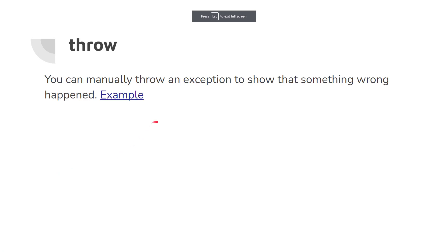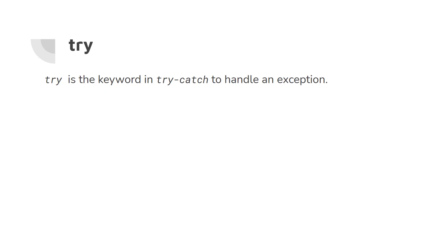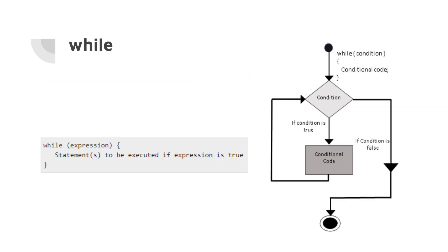The 'throw' keyword is used for manually throwing an exception. 'Try' is the obvious keyword in try-and-catch to handle an exception. 'While' is the while loop — the syntax is while(expression) some statement. If the expression is true it executes the code and loops back to the condition; when false it jumps out of the loop.